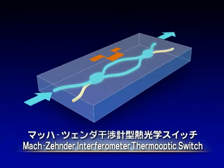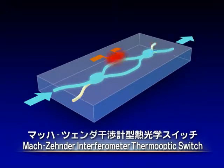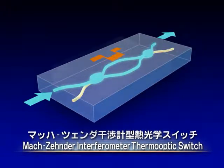Optical signals are normally output from port one. However, if the thin film heater is turned on, the interference conditions are changed and the signals are output from port two. In this way, the destination of the optical signals can be switched.